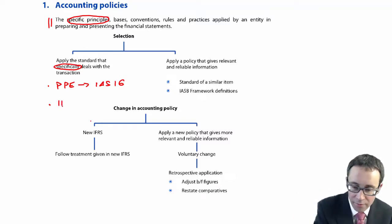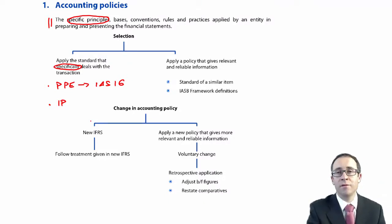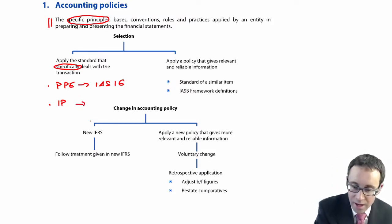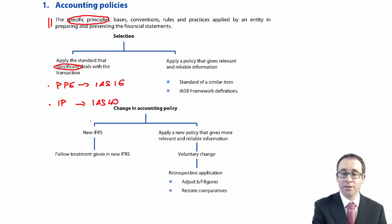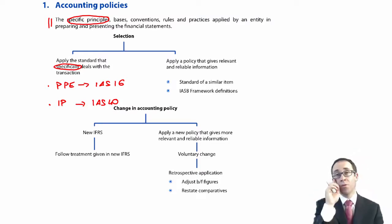However, if you have land and buildings for investment purposes — i.e. capital appreciation or to rent out to other parties — then it's not IAS 16, but IAS 40. So you need to be specific about which standard follows which accounting treatments.